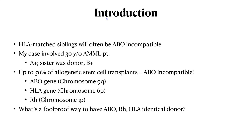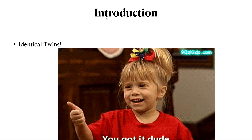Let's begin with the introduction. It's important to recognize that HLA-matched siblings will often be ABO incompatible. A patient that came across our institution was A-positive, received chemo, and was receiving an allogeneic stem cell transplant from his sister who is B-positive, even though they're HLA-matched. Up to 50% of allogeneic stem cell transplants are ABO incompatible, because ABO and HLA are not linked on the same region or even the same chromosome. The ABO gene is on chromosome 9Q, the HLA gene is on chromosome 6P, and RH is chromosome 1P. So what's a foolproof way to have ABO-RH-HLA identical donor? Identical twins.